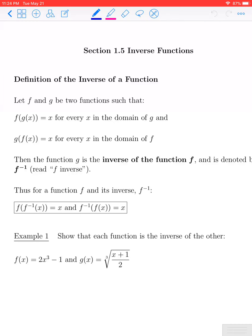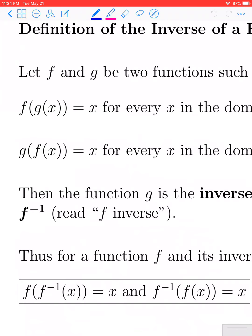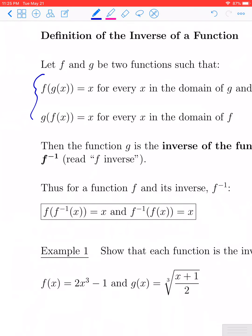In section 1.5 we're going to highlight some of the key features of inverse functions. We say that two functions f and g are inverses of each other if f composed of g of x equals x for every x in the domain of g, and also if g composed of f of x is equal to x for every x in the domain of f. If both functional equations hold true, we say f and g are inverses, and we typically denote g as f inverse.